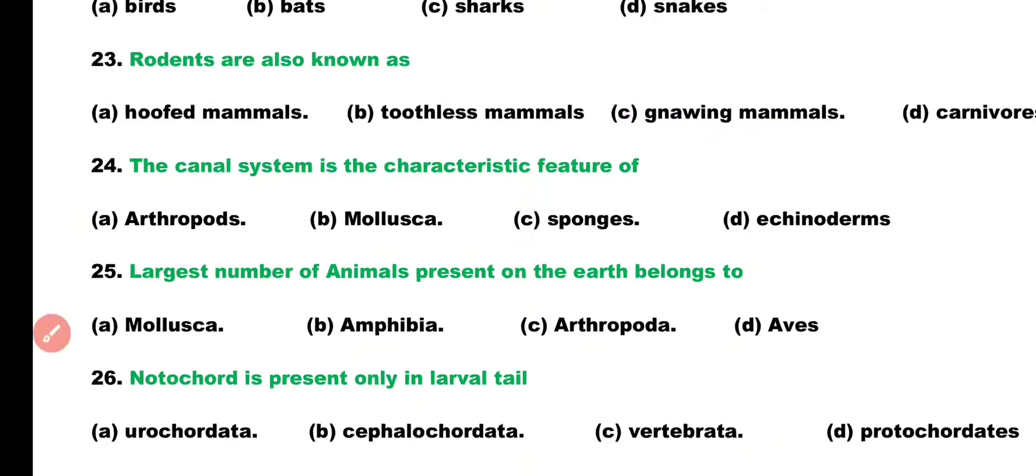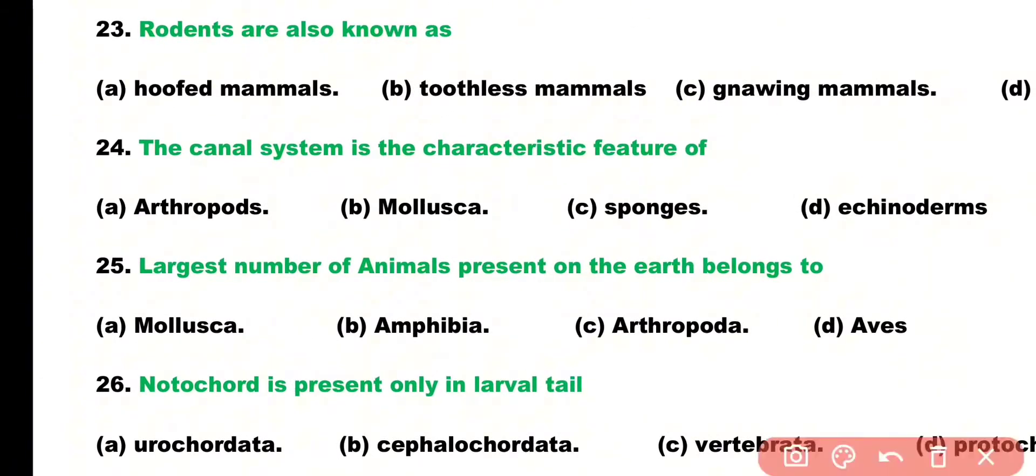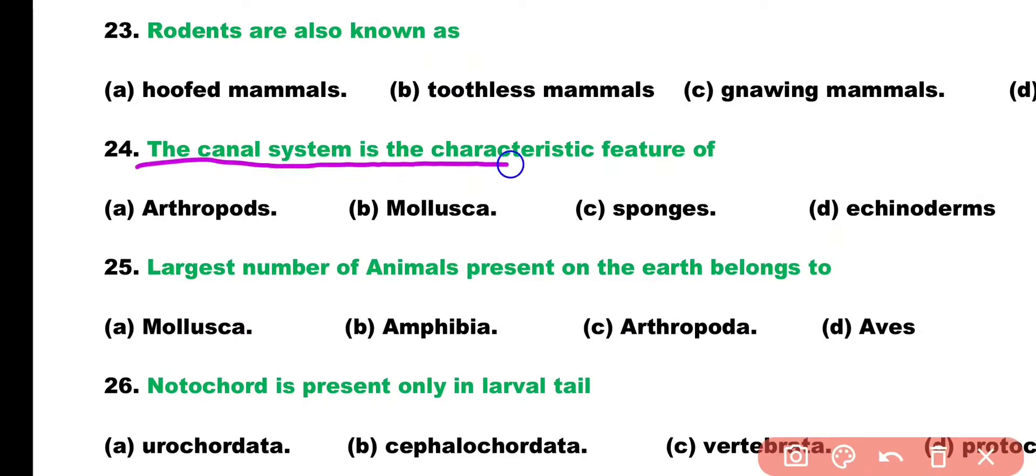Question number 24. Canal system is the characteristic feature of: arthropod, mollusca, sponges, or echinoderms? Correct answer is Option C. Canal system is the characteristic feature of sponges, whereas water vascular system is the characteristic feature of echinoderms.